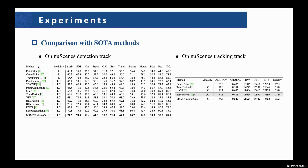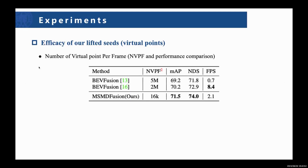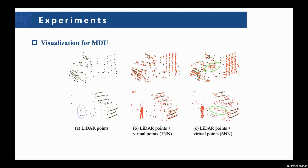We present our MSMDFusion performances on the nuScenes detection and tracking benchmark, and the results prove that our method achieves state-of-the-art performance on both benchmarks. We also compare the number of generated virtual points of our MSMDFusion against other C2L methods. Even with fewer virtual points, our method still outperforms them. We also visualize examples of the generated virtual points of our MDU, and by comparing the second and third columns, we can observe that our MDU captures more geometric details of the object.